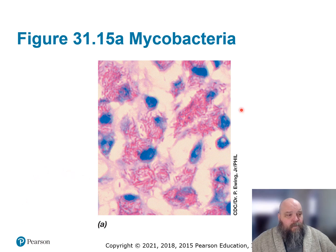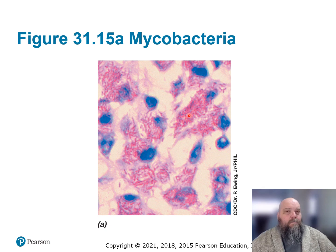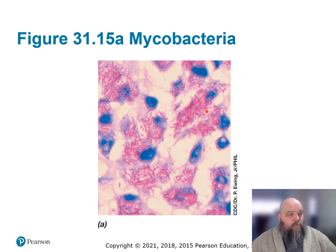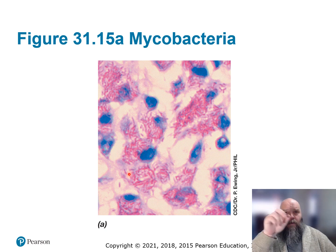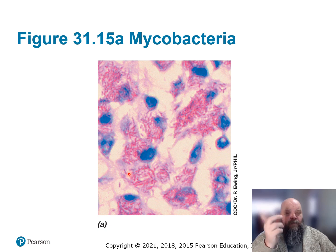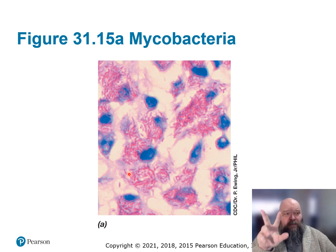When you go and look at it, it's going to stain gram positive. But remember, it's mycolic acid, not peptidoglycan. So that's a false positive for the gram stain — you have to use the acid-fast stain instead of alcohol. With the gram stain: purple is positive, red is negative. With the acid-fast stain, it's flipped: red is positive, purple is negative. You've got to remember it's a flip.